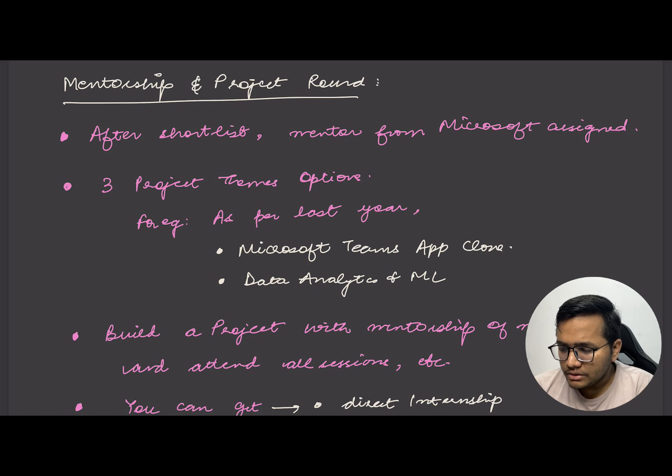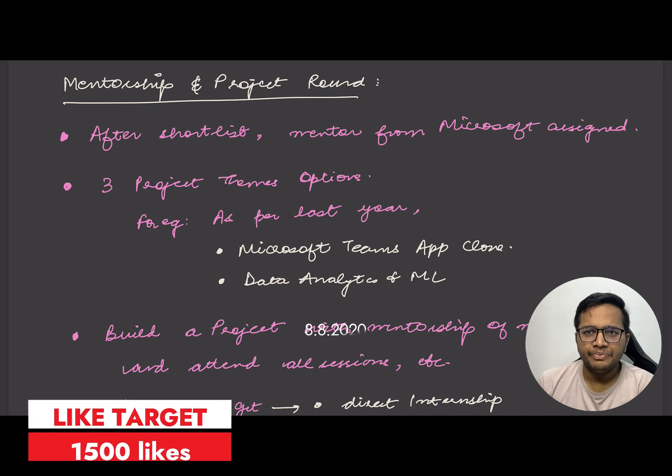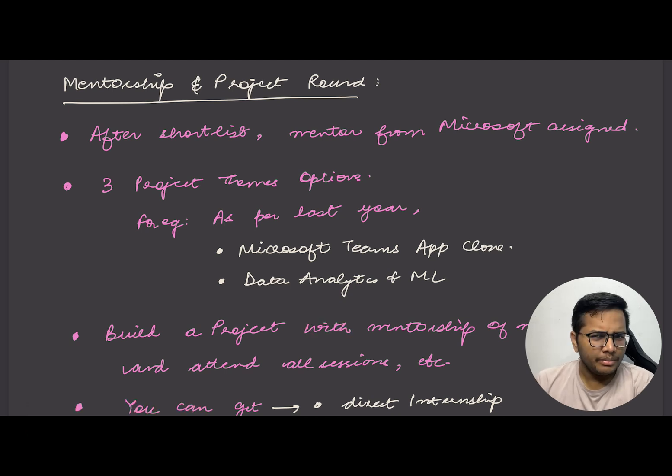Build a project with mentorship of your mentor and attend all sessions. You should be in constant touch, taking feedback regularly from your mentor—what to do, how to do, when to do—so he stays in touch with you and gives good feedback. Based on his feedback, you'll either get a direct internship at Microsoft or an interview for internship.